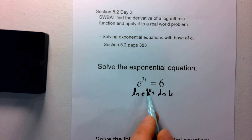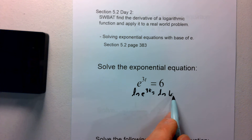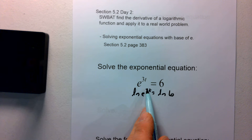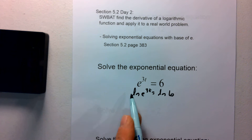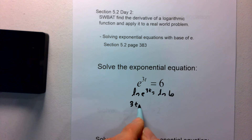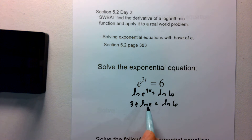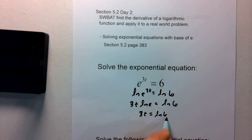So we have the natural log of e to the 3t equals the natural log of 6. Remembering our exponent rules for logs, we can take that 3t — that exponent — and bring it to the front of the natural log. So we have 3t times natural log of e equals the natural log of 6. Natural log of e, by definition, is 1. So we have 3t equals the natural log of 6, and we can divide by 3.